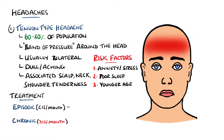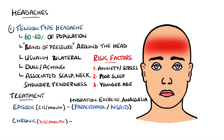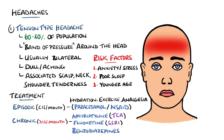Episodic tension headaches are often treated with hydration, exercise, and over-the-counter pain relief like paracetamol or non-steroidal anti-inflammatories, while chronic tension headaches may require prescribed medication, including antidepressants like amitriptyline, which is a tricyclic antidepressant, or selective serotonin reuptake inhibitors like fluoxetine. Benzodiazepines can also be used. Overall, the tricyclic antidepressants have been found to be the most effective.